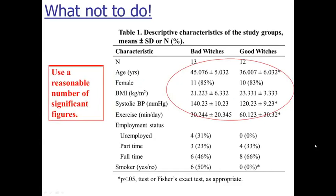Another common problem I see in tables is people go out to ridiculous numbers of decimal places. This happens because you put something like age into your statistical analysis program and it can output something like 36.007. But do we really need to know the mean age to three decimal places? We don't. It's not important and it makes the table look cluttered. Go back and make sure you're not putting in too many decimal places. I generally recommend no or one decimal place in clinical data.